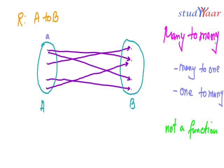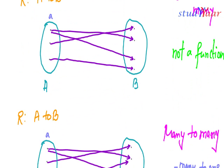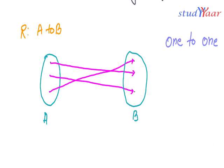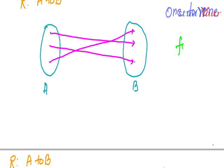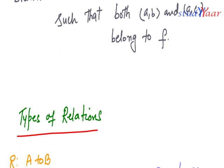So we have seen four types of relations: many-to-many and one-to-many, which are not functions; and many-to-one and one-to-one, which are both functions. That was about what kinds of relations can be functions.